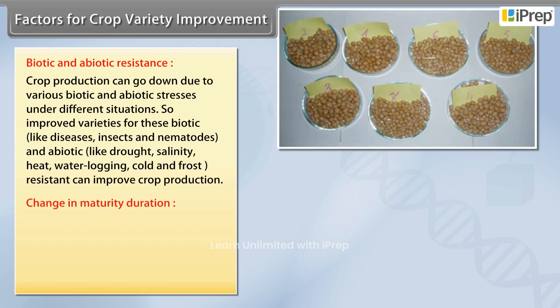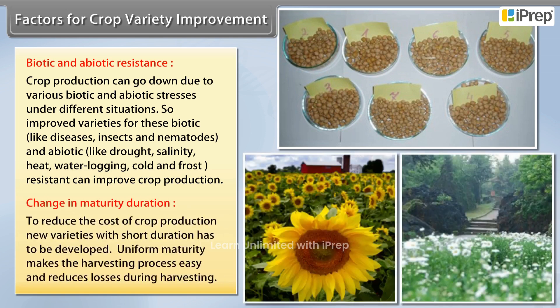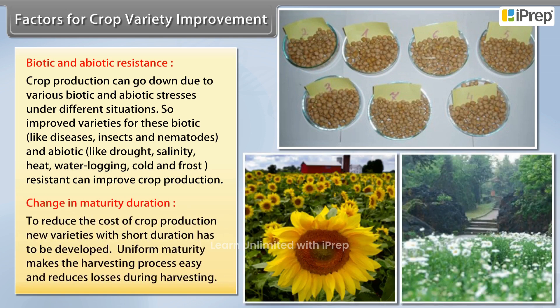Change in Maturity Duration: To reduce the cost of crop production, new varieties with short duration need to be developed. Uniform maturity makes the harvesting process easy and reduces losses during harvesting.